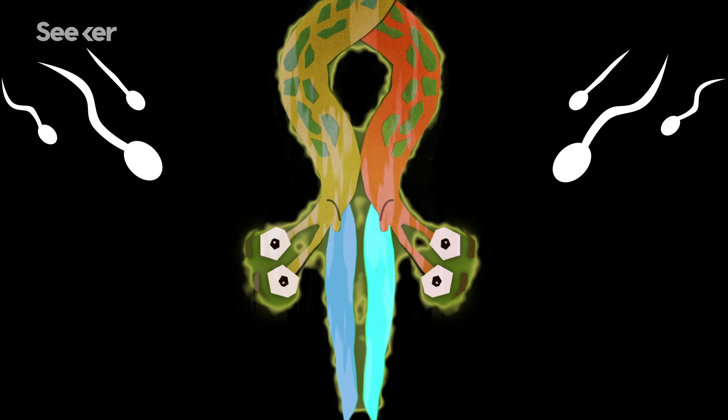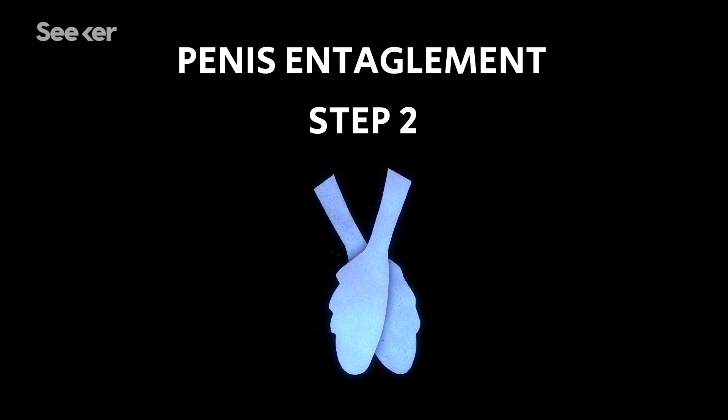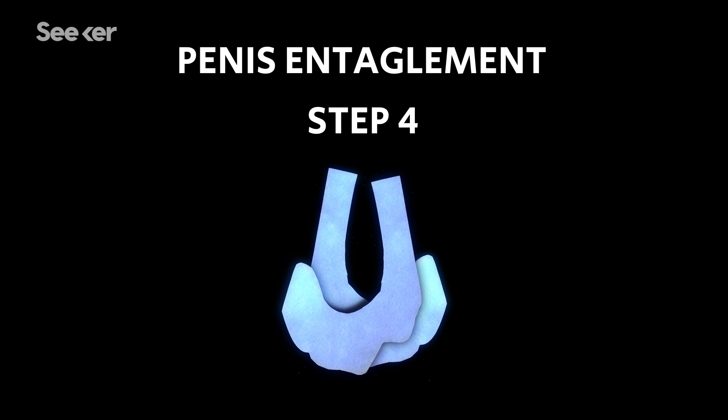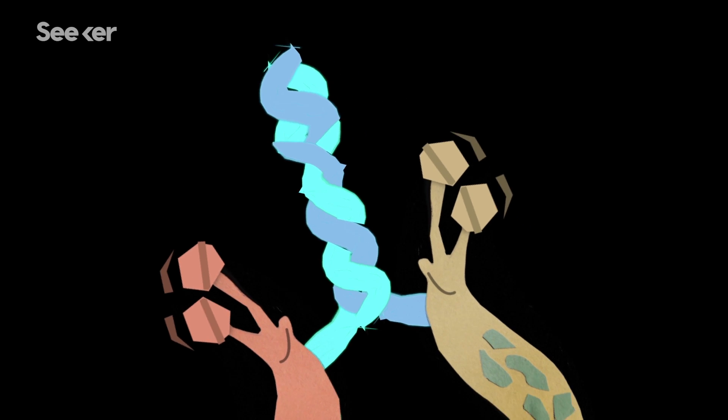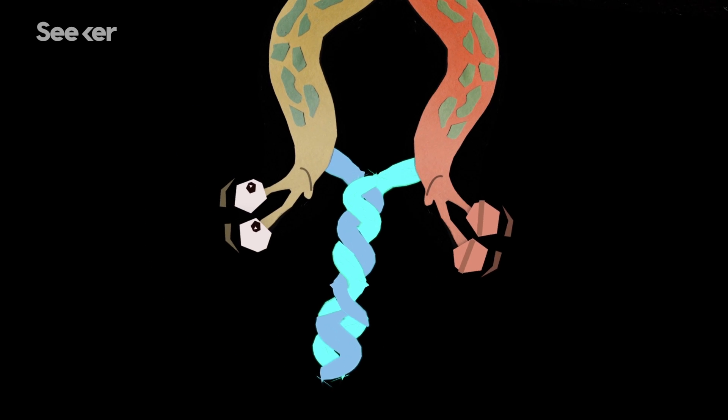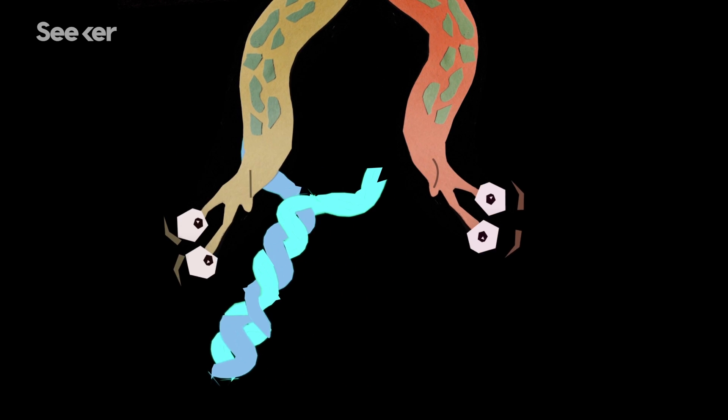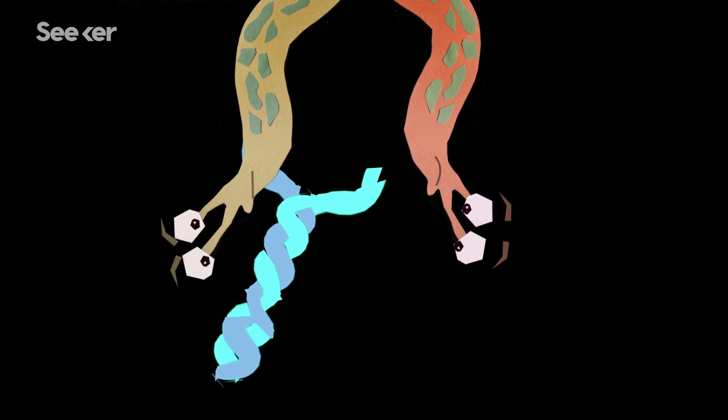This is where things can go wrong. Leopard slug penises have a corkscrew-like shape, which results in an intricate tangling pattern during sex. While sometimes slugs are able to free their phalluses, in this case, one got impatient and simply bit its partner's penis off.